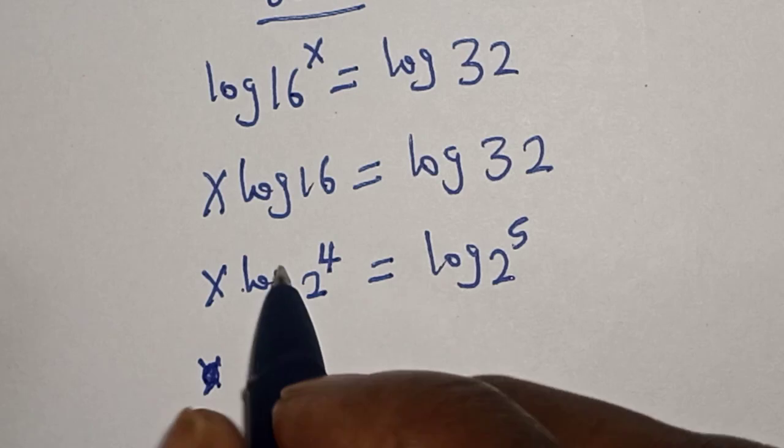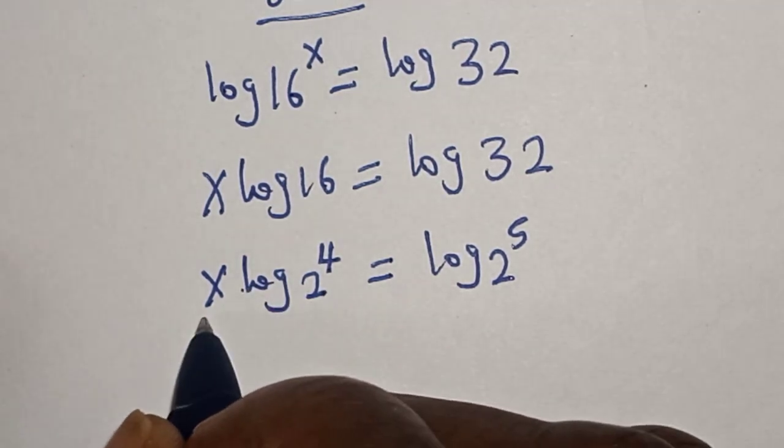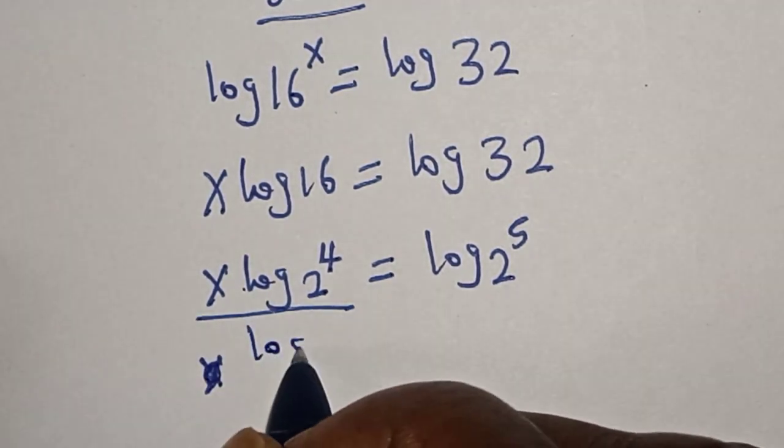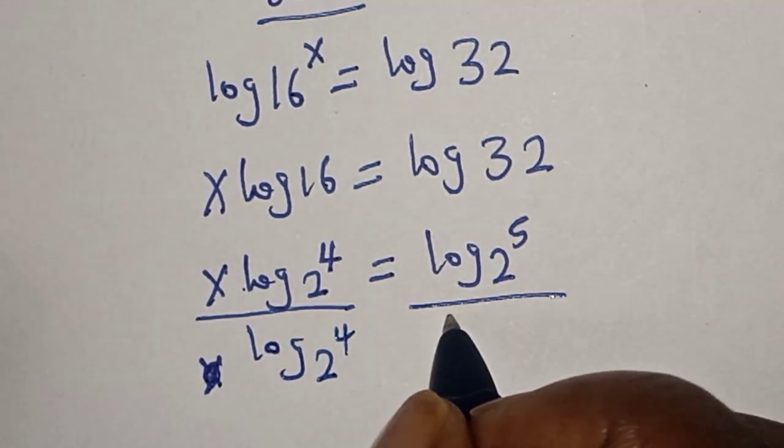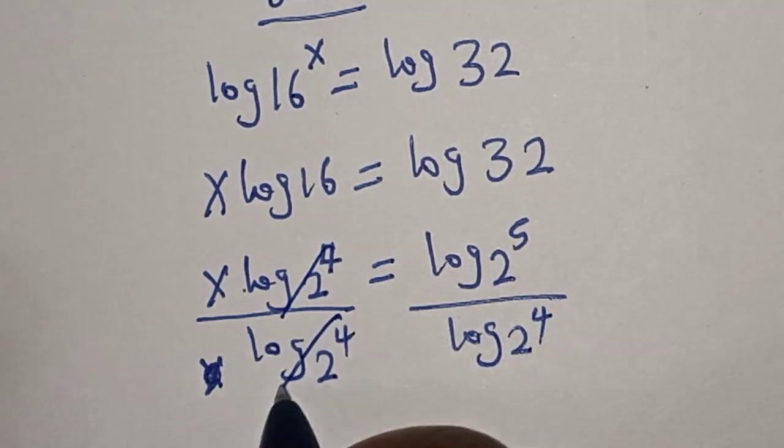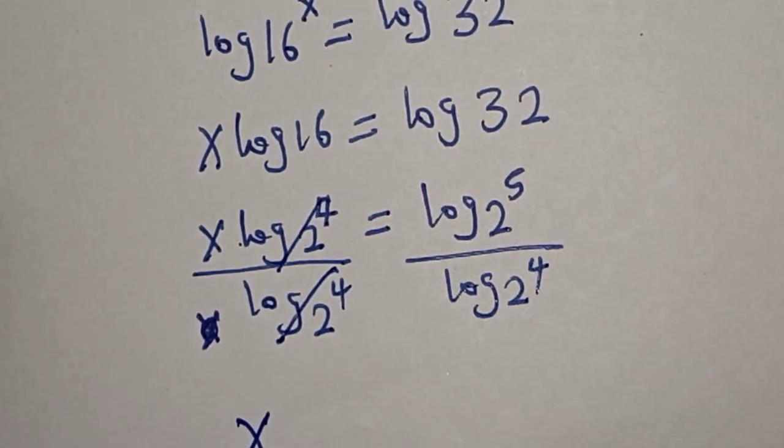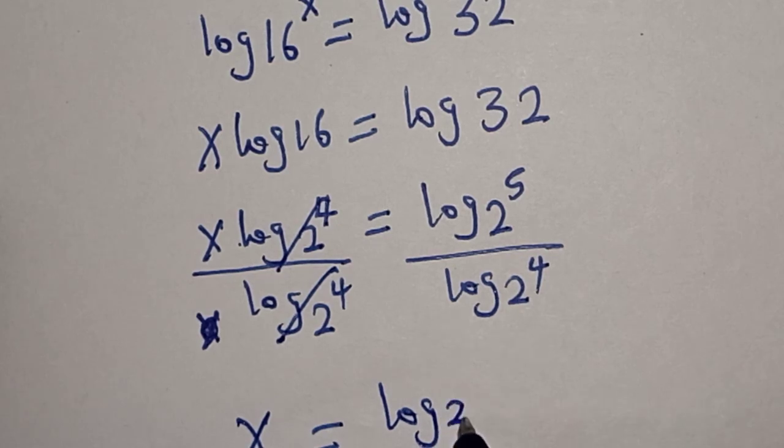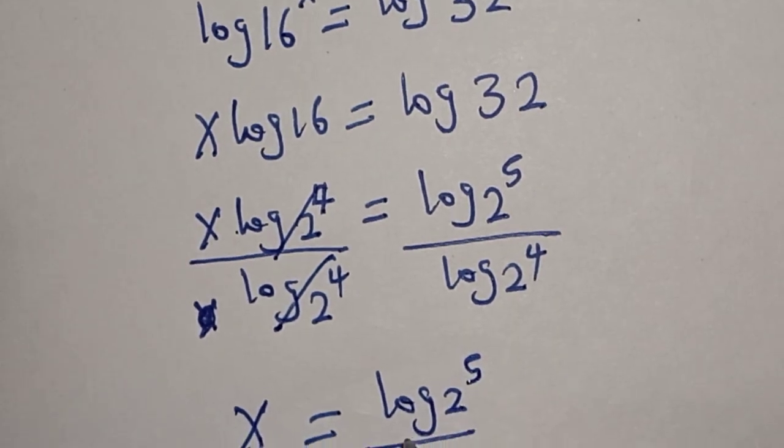Divide both sides by log 2 raised to power 4. This will cancel. So x equals log 2 raised to power 5 over log 2 raised to power 4.